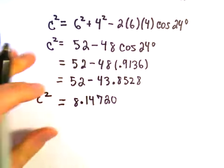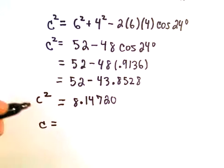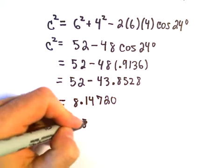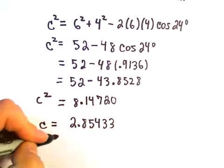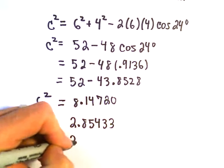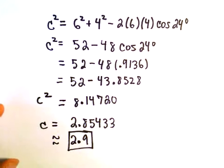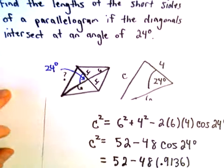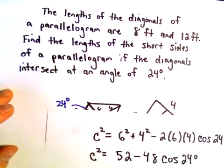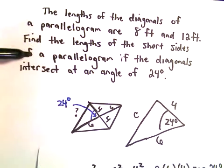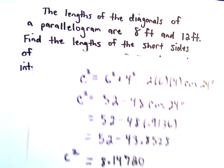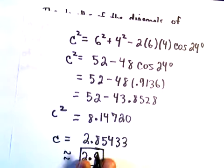Well, if we take the square root of both sides, keeping the positive solution, we'll be left with 2.85433. Let's at least maybe round this off to 2.9. So that's it. I would say the short sides of our parallelogram simply would have length 2.9 each.